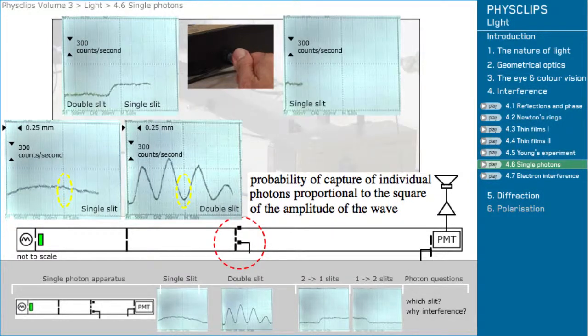Now the reverse, starting with one slit. We open the second slit, we add more photons, but the capture rate falls.